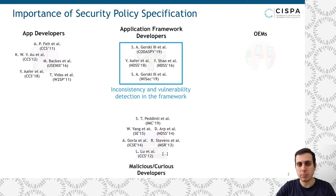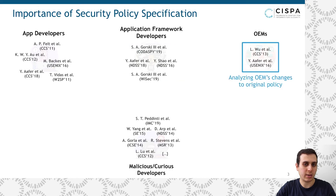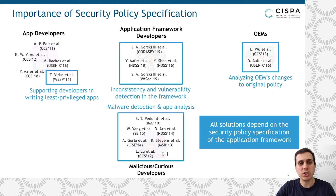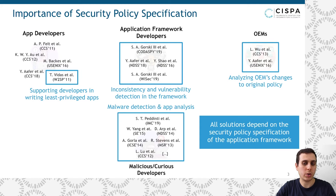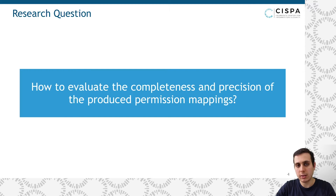Other works built an abstract permission mapping to scan the framework itself for vulnerabilities in the access control enforcement, while a couple of other works analyzed the OEM modifications. The bottom line is that all of these works used a form of a permission mapping as the main building block in their solutions, and therefore they inherit the limitations of these permission mappings, which would affect the precision of their own results. This brings us to our research question: how to evaluate the completeness and the correctness of the methods that produce permission mappings, and also the results of the applications that build on top of them.